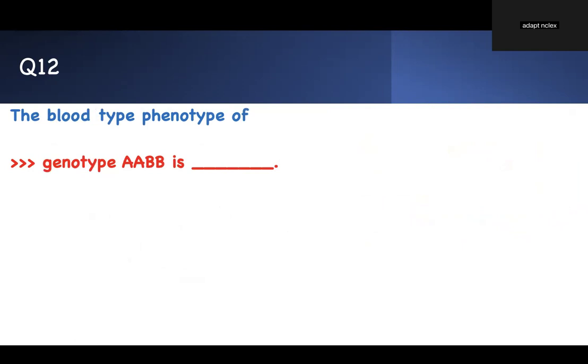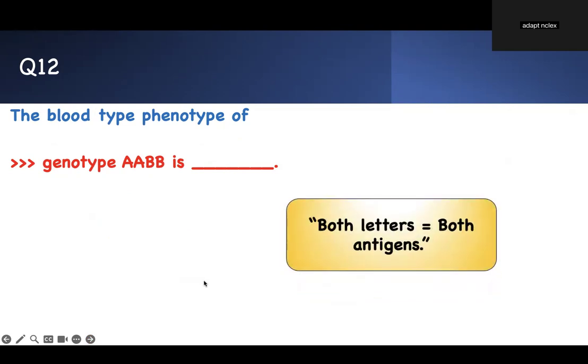Like I said, rapid fire, rapid fire, rapid fire. The blood type phenotype of genotype AABB is what? This is straightforward. Don't worry about it. A, A. A will divide into A and B will divide into B. Therefore, we have AB. But if you don't know how to do that, this is my mnemonic. Both letters, both antigens. If you have both letters, you're supposed to have both antigens. Therefore, it's going to be AB.